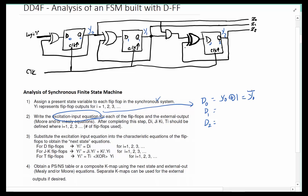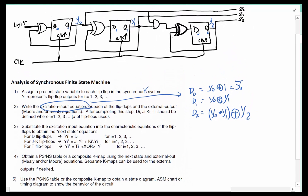Then d1 is another XOR — it looks like it is y0 XOR with y1, so d1 = y0 XOR y1. Then d2 is a little more involved: it looks like it is y0 AND y1, and that result is XOR'd with y2, so d2 = (y0 AND y1) XOR y2.